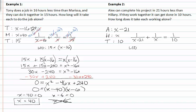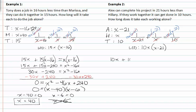Finding the LCD gives us ten x times (x minus twenty-one). From here, we multiply each term in our equation by the LCD. Dividing out the common factors gets rid of our denominators. Rewriting the equation gives us: ten x plus ten times (x minus twenty-one) equals x times (x minus twenty-one).